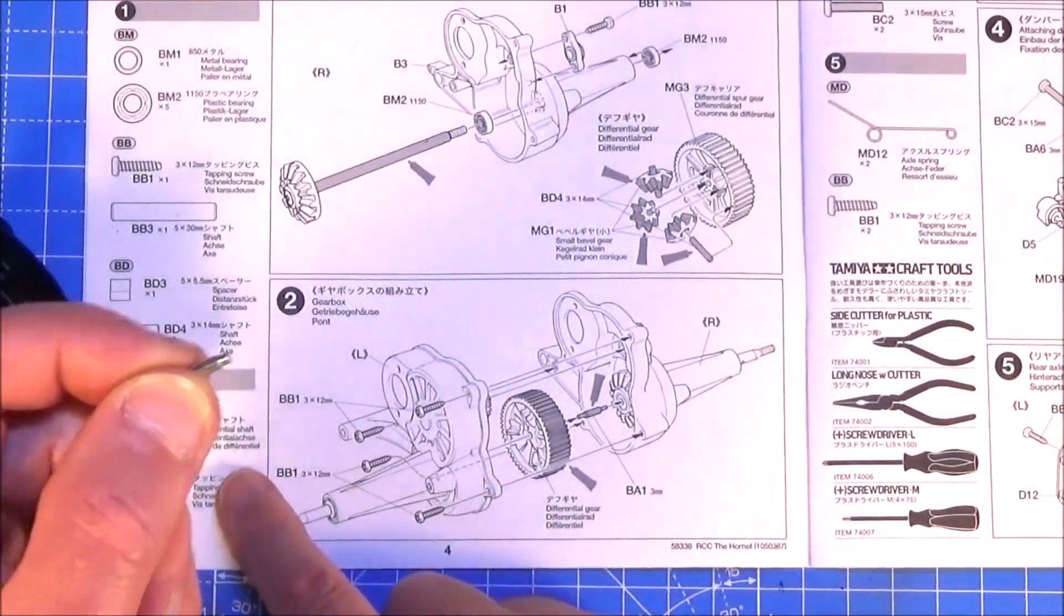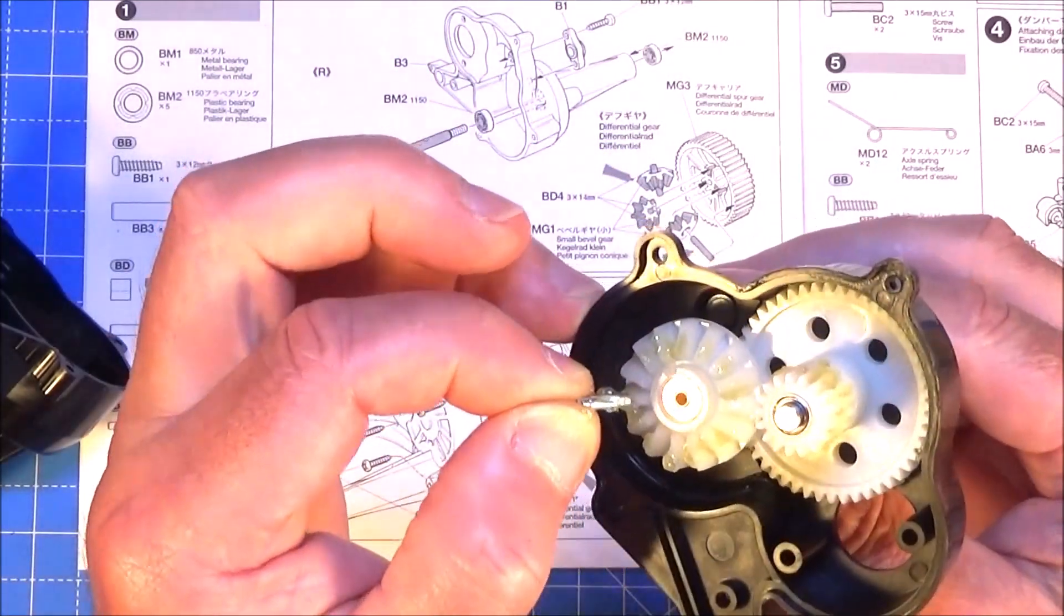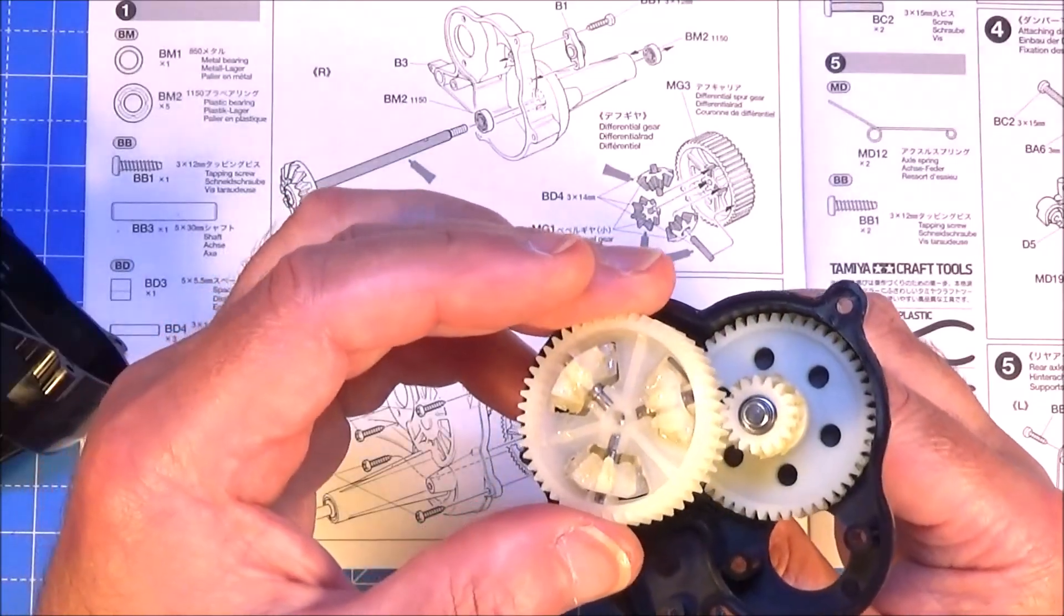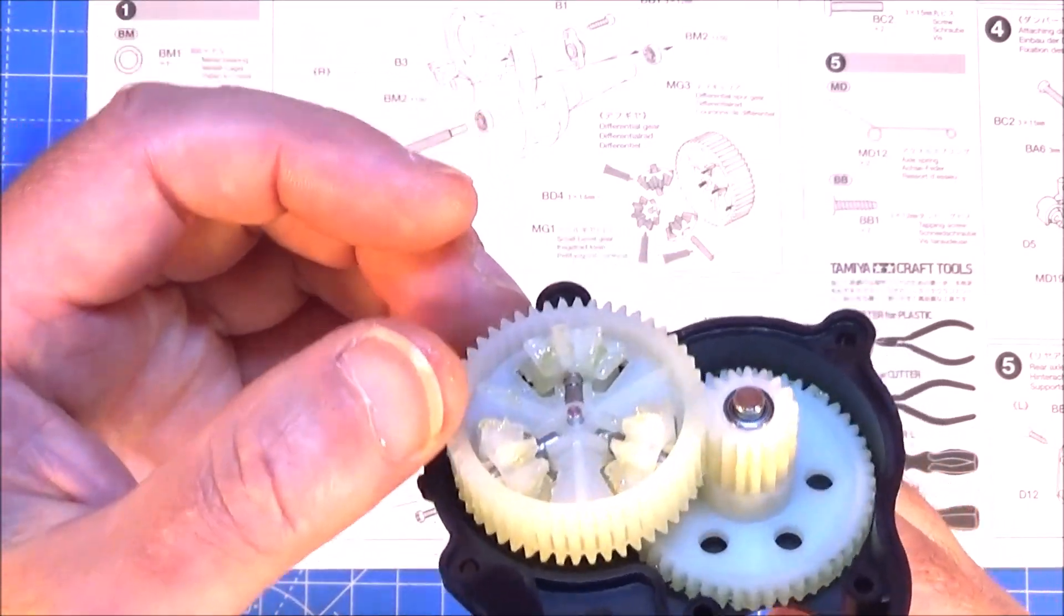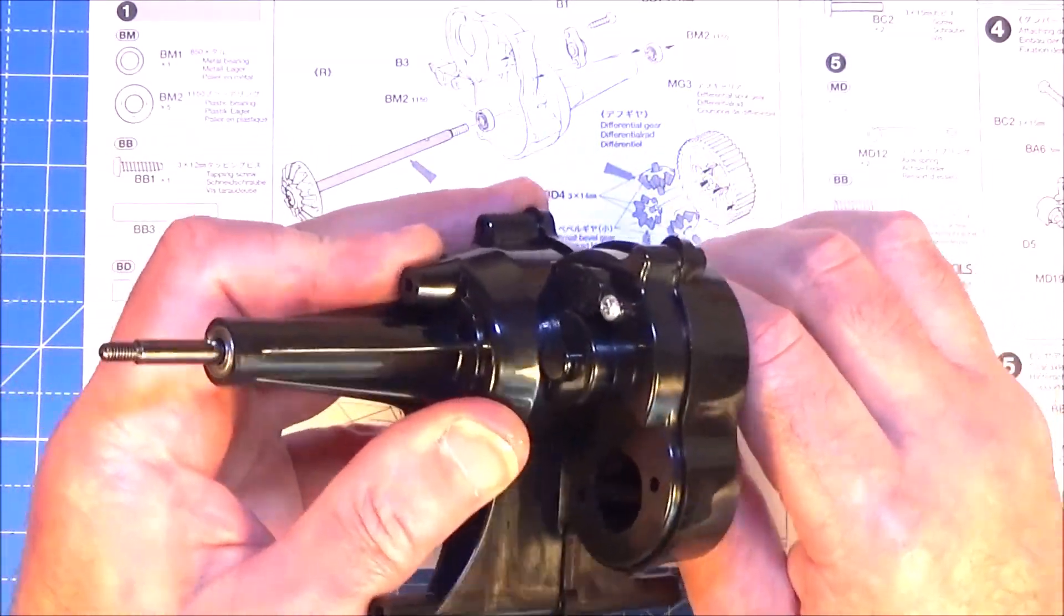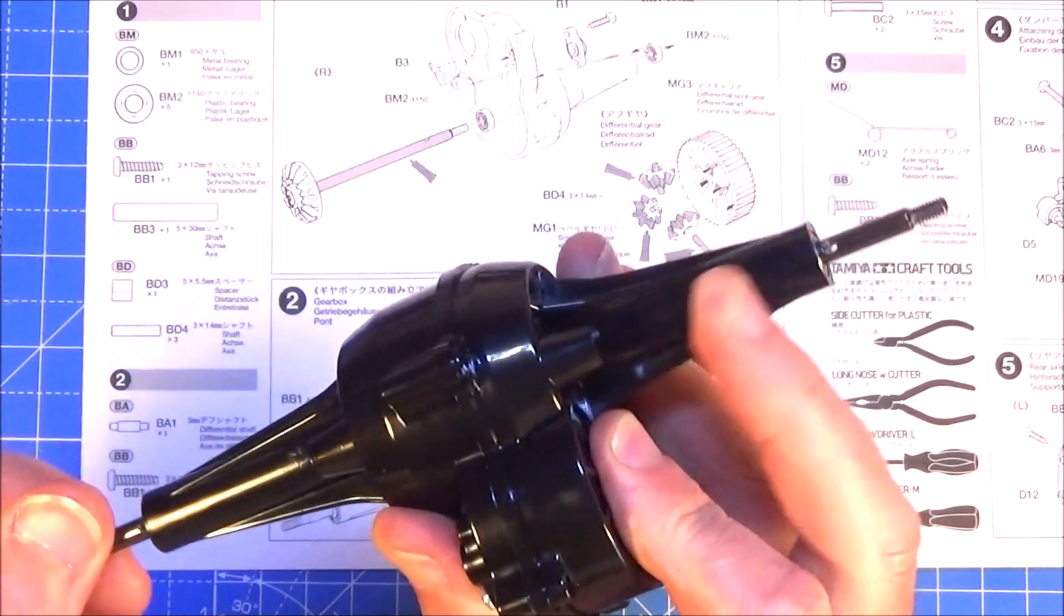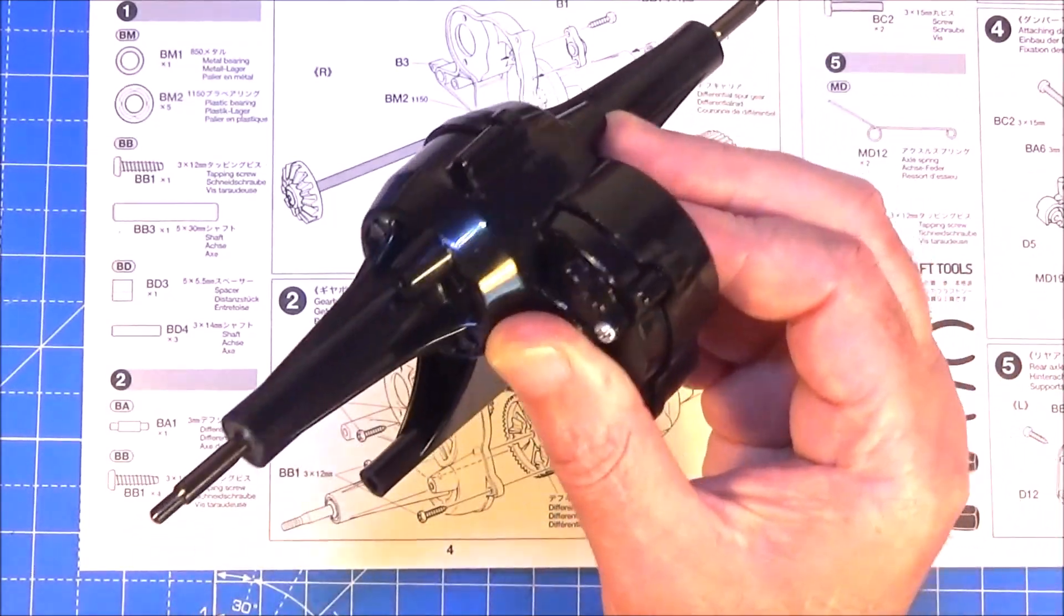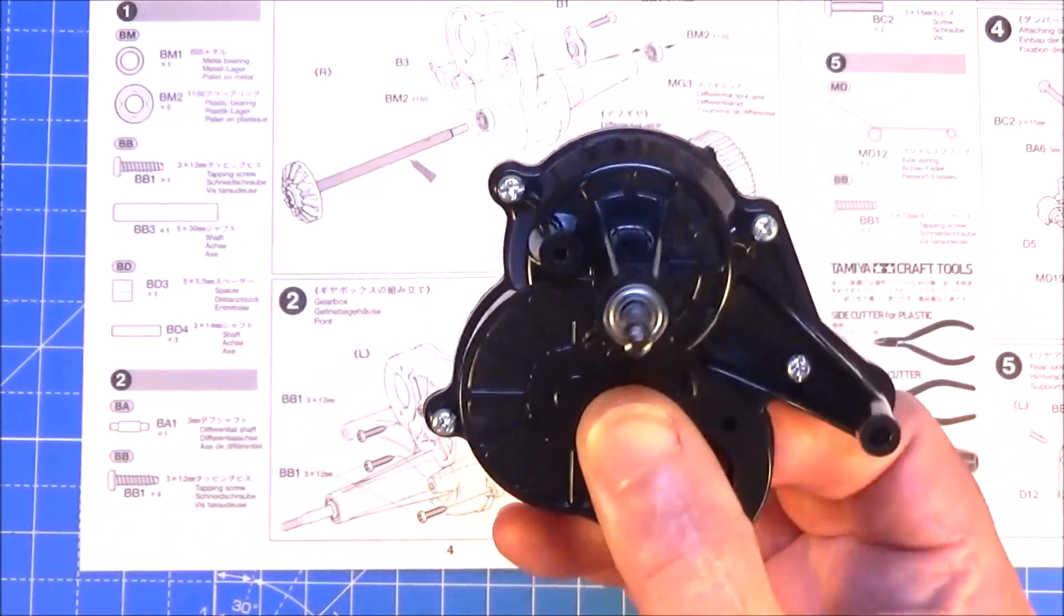And straight onto step 2. The first thing you're going to need is this little part BA1, a tiny little pivot. Again, put some grease on it. Insert that into the centre here of the drive shaft. Get your diff assembly and then pop that over the centre of that shaft as well. And then make sure it's engaging properly with the other gear. That looks okay to me. Then simply get the two halves of the gearbox, carefully line them up, and it should just slot together. It's all feeling good. Just give it a check. You turn the one shaft and the other one should turn freely. And it does. So now we can get the four 3x12 self-tapping screws to hold it all together. Do those up and that's the end of step 2.